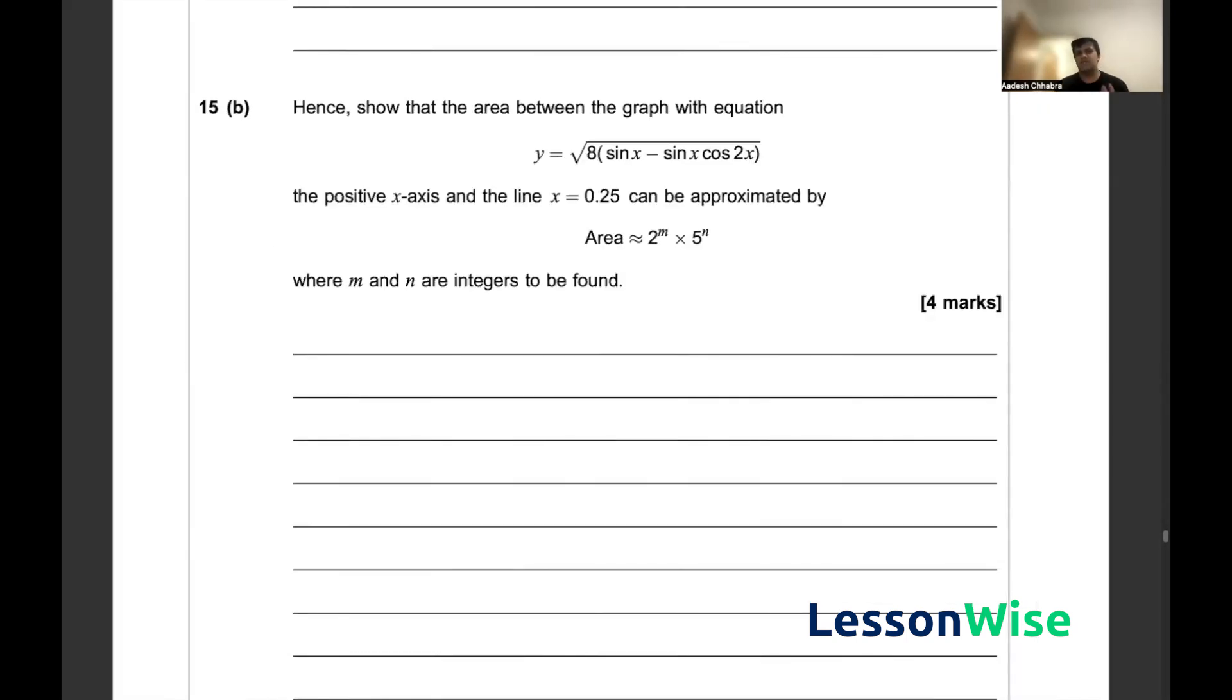For question 15b we've been asked to hence show that the area between the graph with equation y equals the square root of 8 times sin x minus sin x cos 2x.